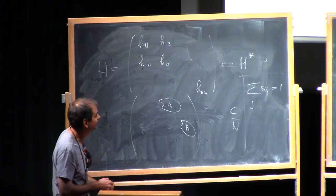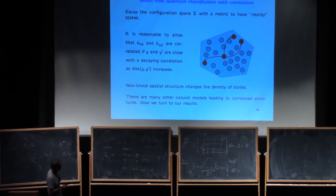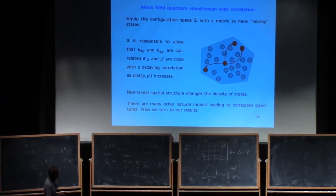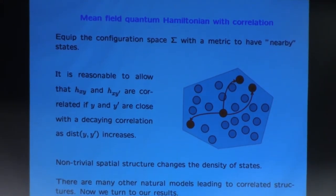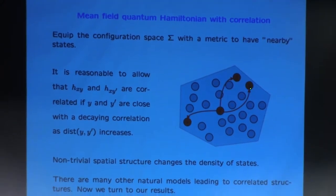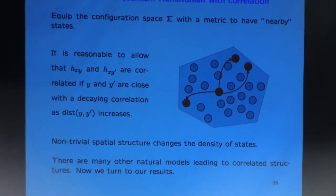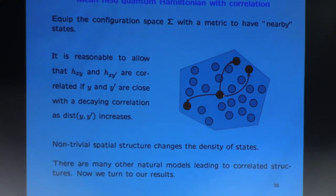That was our theorem, and the motivation comes from disordered quantum systems. When do you expect two transition rates to be correlated? Look at a transition rate going out from X. If the configuration space has some metric so certain points are closer to each other, and you have two sites Y and Y' which are close to each other, it's reasonable that the transition rate from X to Y and from X to Y' are not fully independent — they have some correlation that decays as the target point gets farther away. So H_{XY} and H_{XY'} are correlated, but H_{XY} and H_{XZ} for Z far away are uncorrelated.